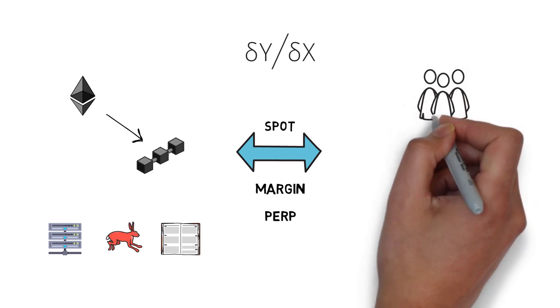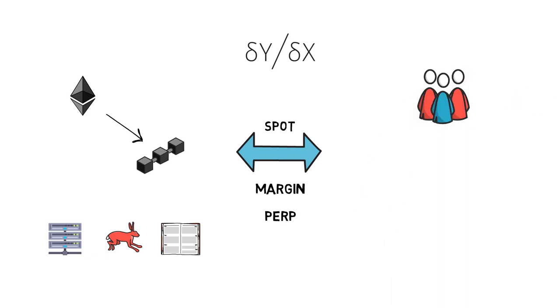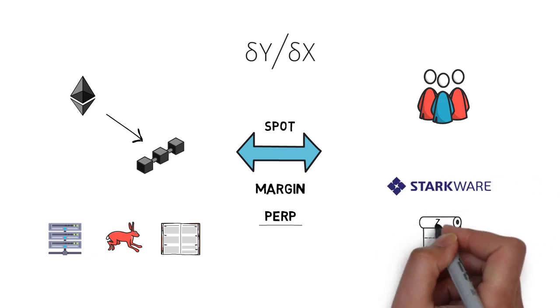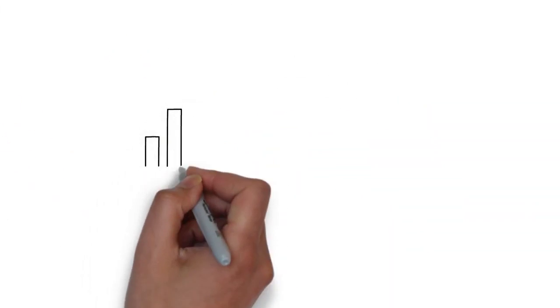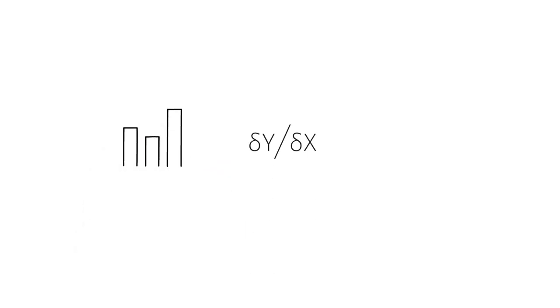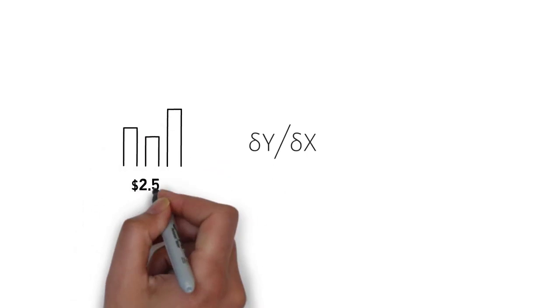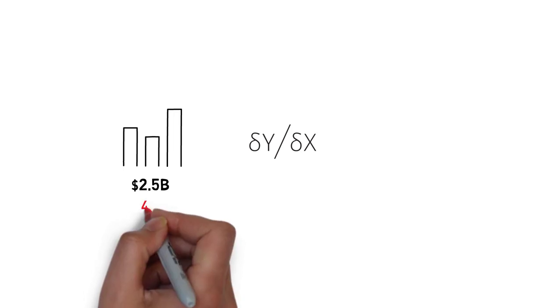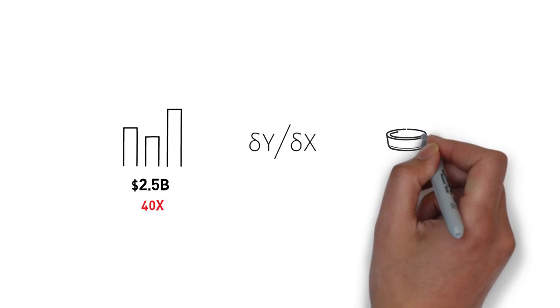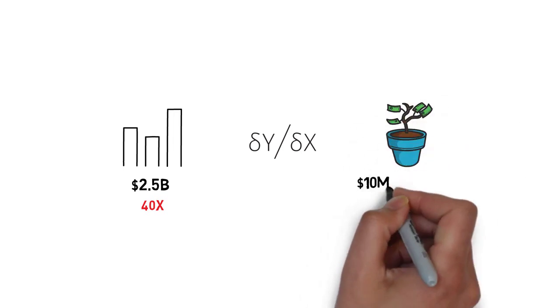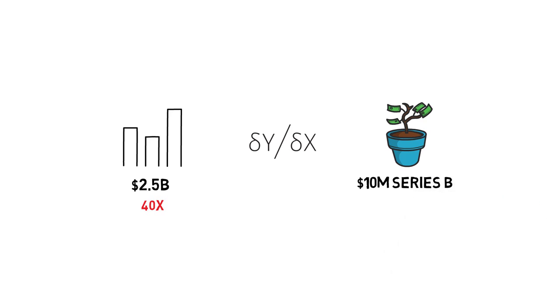Besides that, the dYdX team has been building a new product for perpetual contracts on layer 2, powered by Starkware's ZK rollups that is due to launch in early 2021. The total cumulative trade volume across all products on dYdX reached $2.5 billion in 2020, a 40x increase when compared to the previous year. dYdX has recently raised $10 million in a Series B round led by Three Arrows Capital and Defiance Capital.